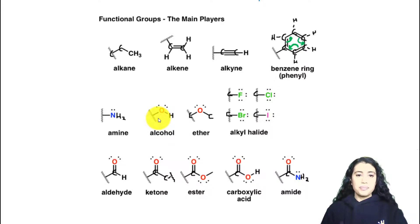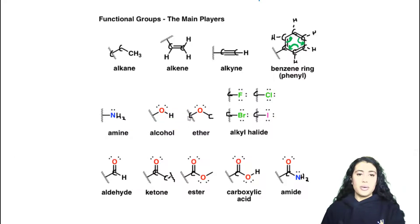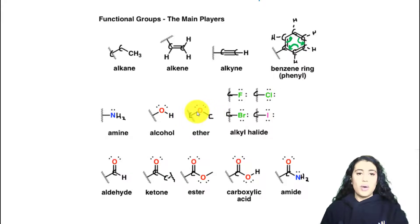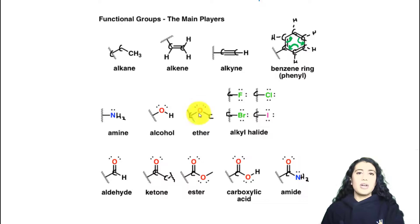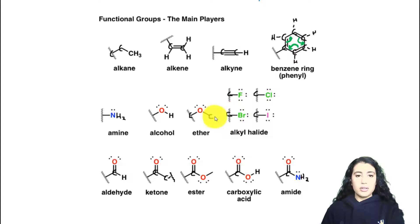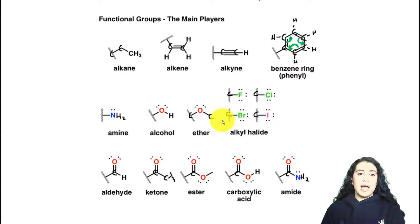An ether is when we have a carbon chain with two carbons on either side of an oxygen, so anytime carbons are surrounding a single oxygen atom we call that an ether. An alkyl halide — the alkyl part refers to whatever carbon chain you have, one carbon, two carbons, and so on — and the halide part refers to a halogen.